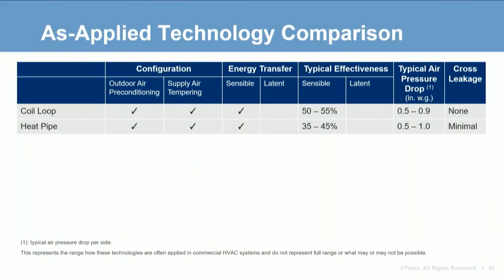Adding heat pipes to the comparison table: heat pipes can be used to precondition outdoor air in a side-by-side configuration. Some manufacturers also provide configurations wrapped around a cooling coil, providing supply air tempering. Heat pipes transfer sensible energy but no latent energy. Sensible effectiveness is very similar to coil loops at 30 to 52%, air pressure drop is fairly similar, and heat pipes generally have minimal cross leakage.